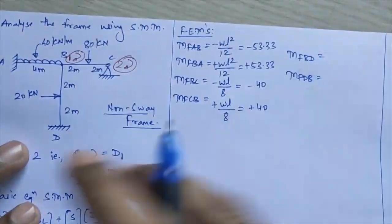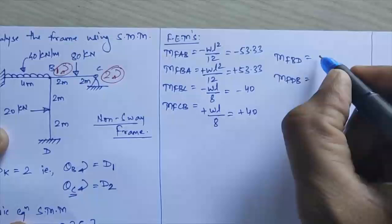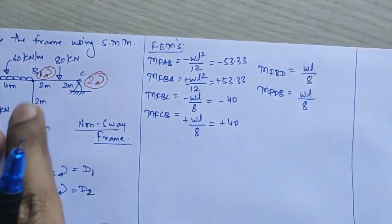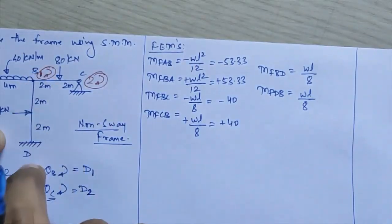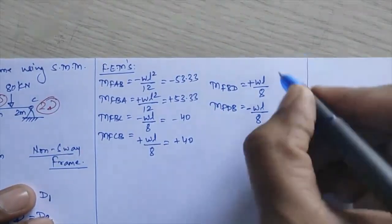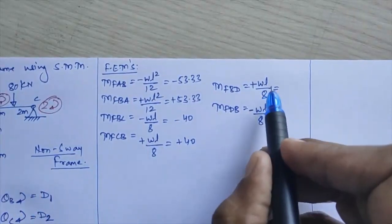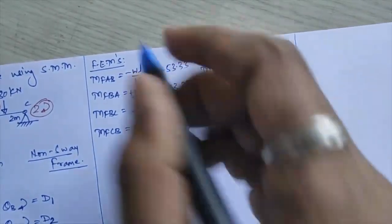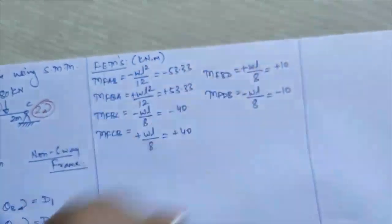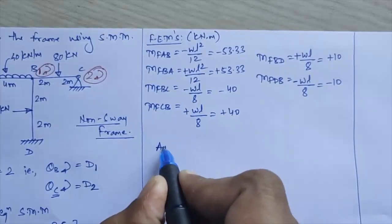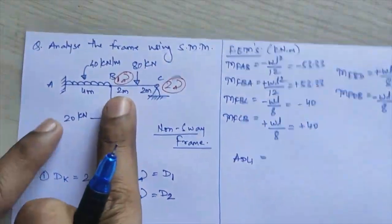For BD and DB, again a point load is provided. Examining the restoring moment: MF_BD is clockwise, so it comes positive. MF_BD = +WL/8 = +20×4/8 = +10 kNm, and MF_DB = −10 kNm. These are all the fixed end moments in kNm.